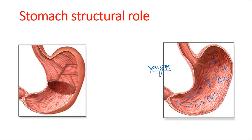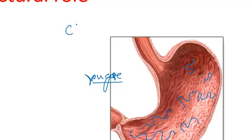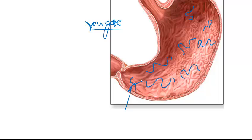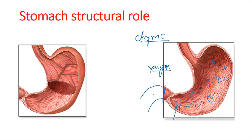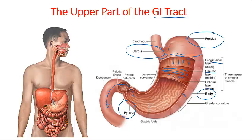The stomach can expand according to its requirements. Once food is mixed with gastric juices secreted by the stomach, this mixture is known as chyme, which is then moved from the pylorus — the end of the stomach — into the duodenum and the small intestine. This is the end of the upper GI tract; once the duodenum starts, we call it the lower GI tract.